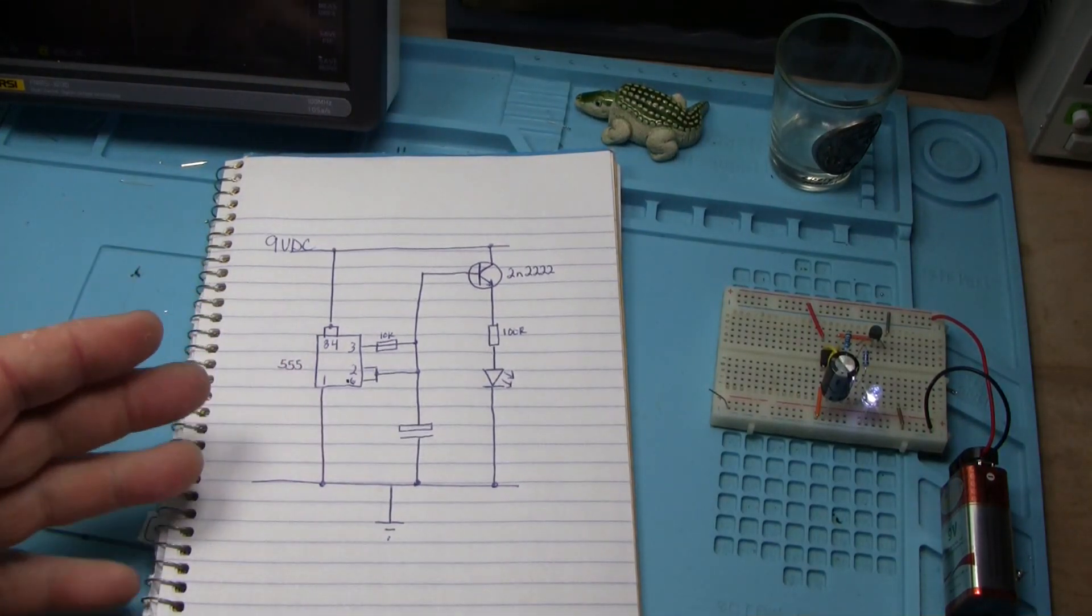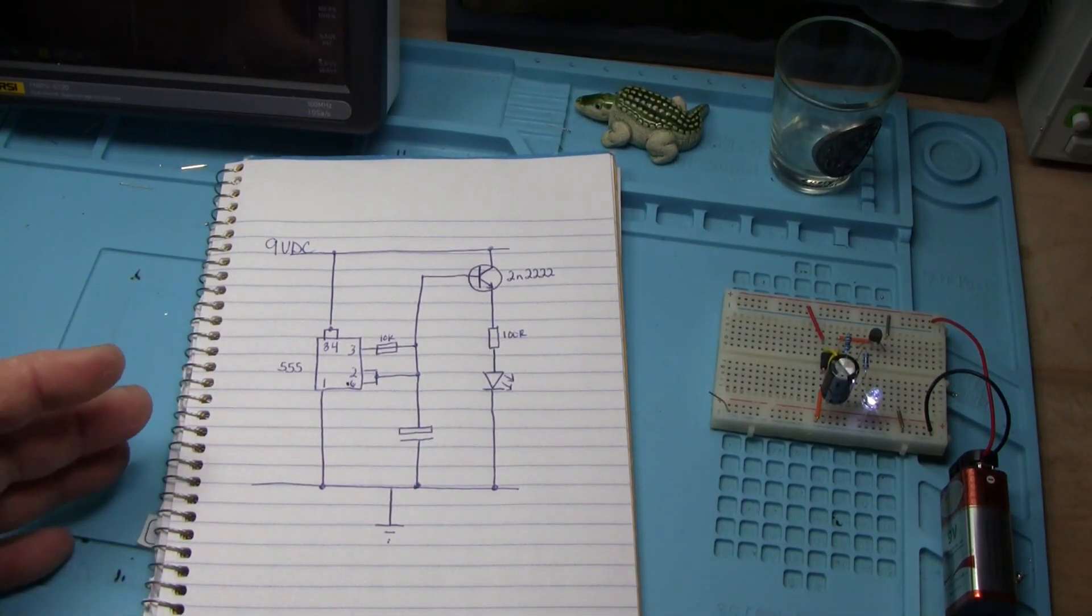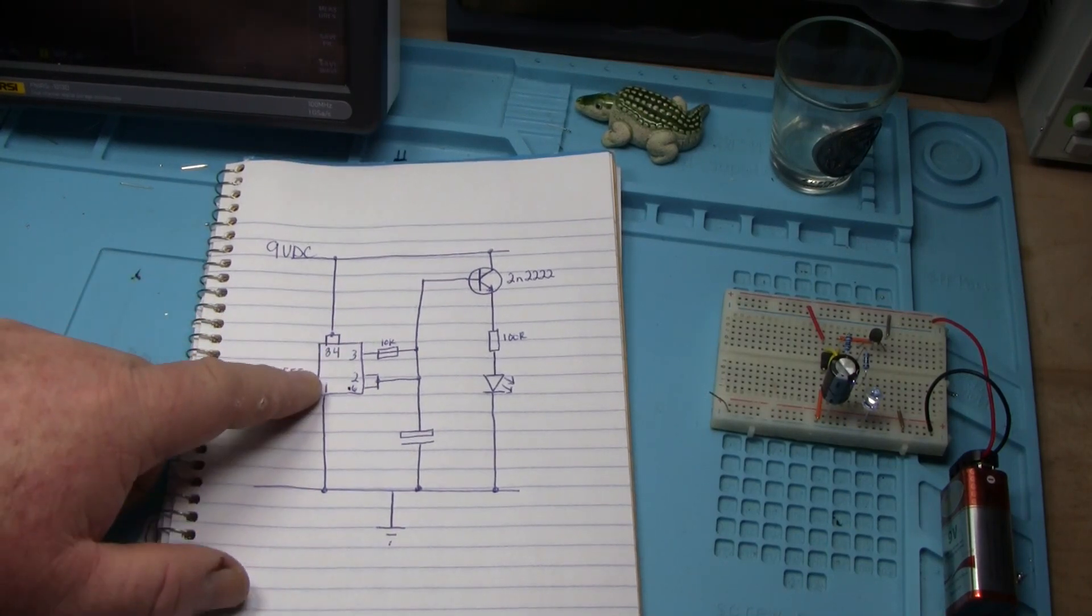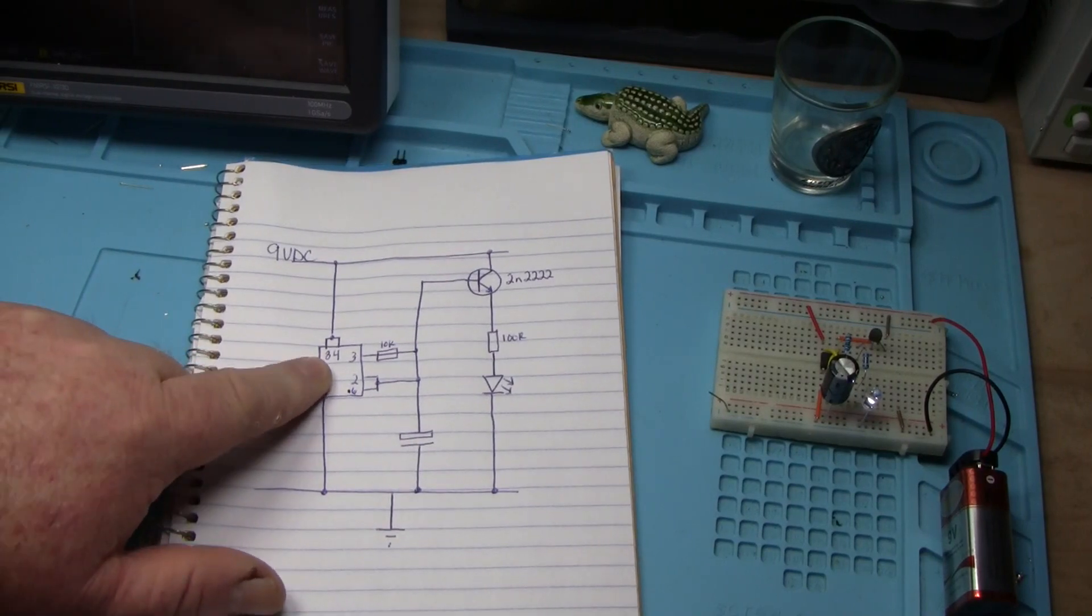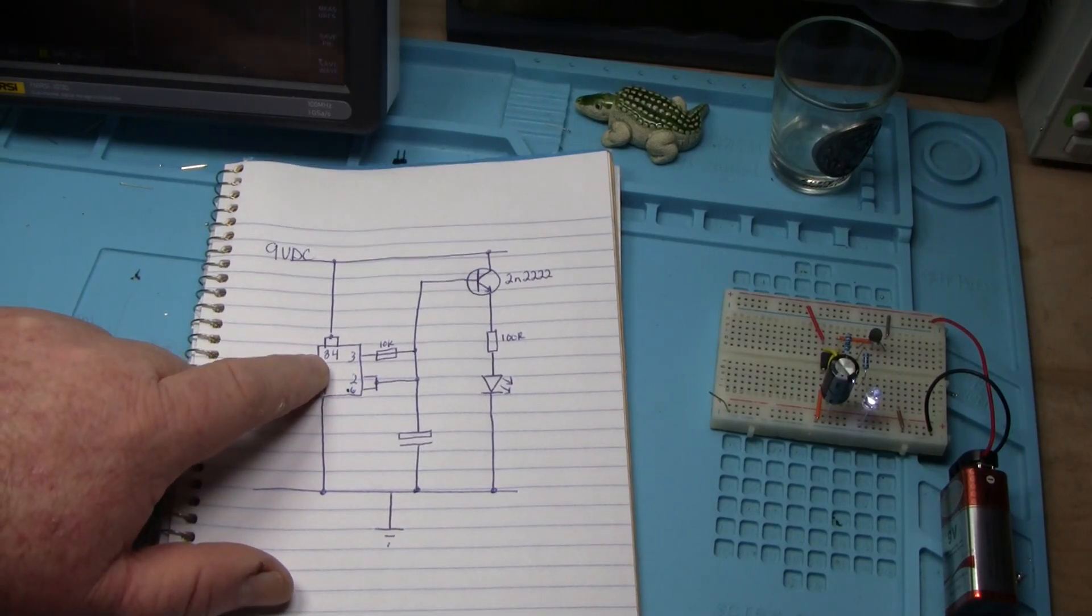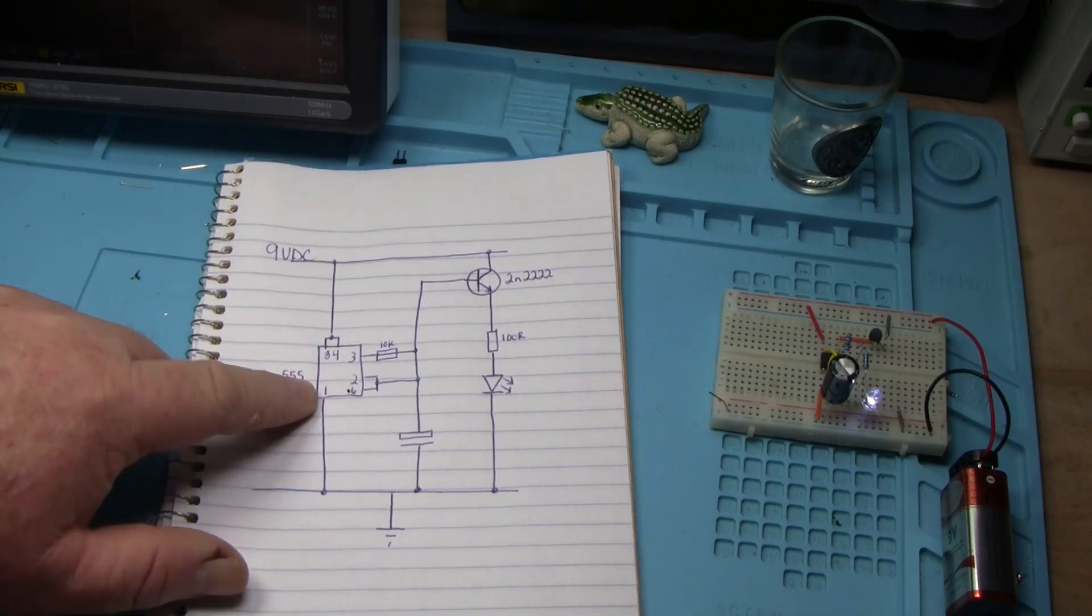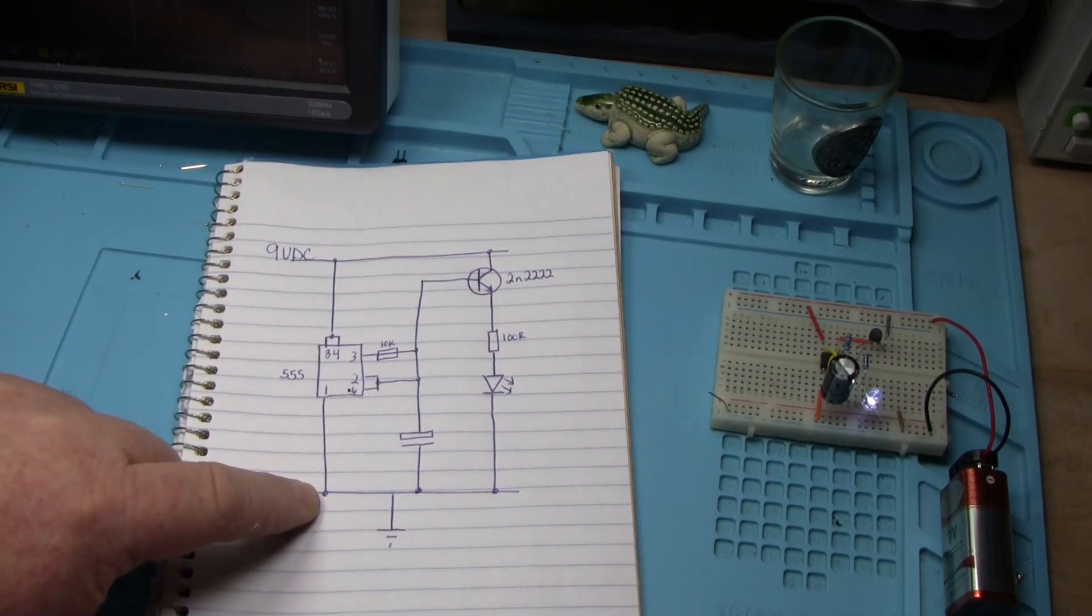It's basically a play on the astable multivibrator function of the 555 timer. So we start with our 555 timer, and we take pins 8 and pins 4, which is our VCC and our reset, and we pull them high. Pin 1, which is our ground pin, we pull low.